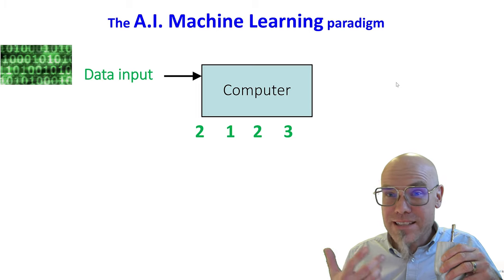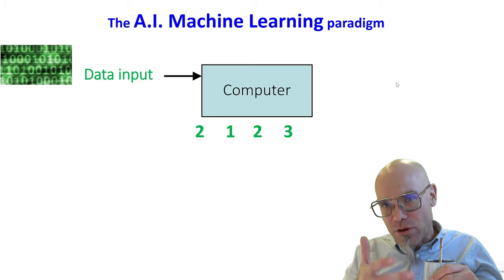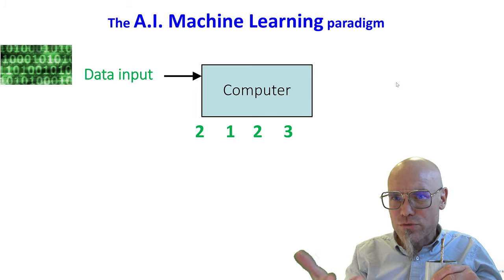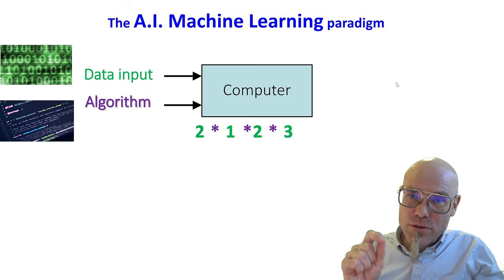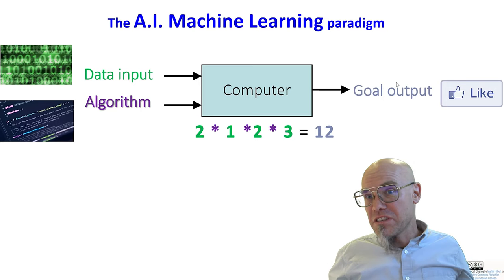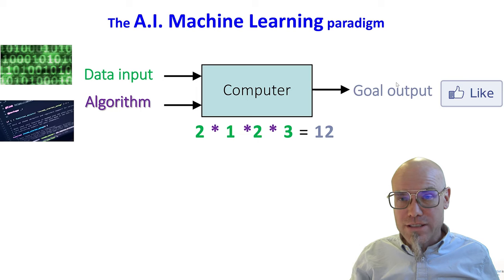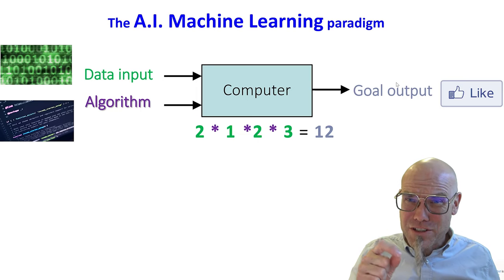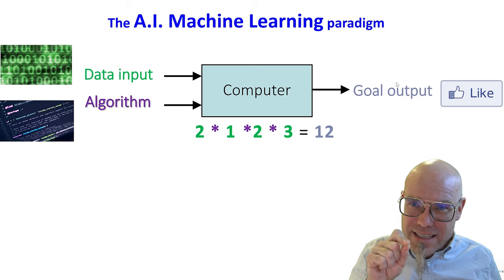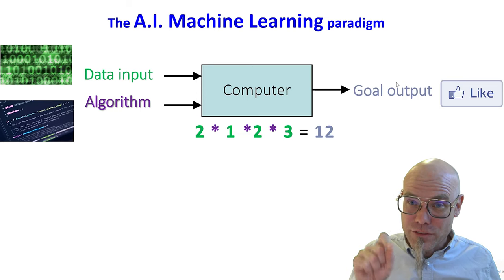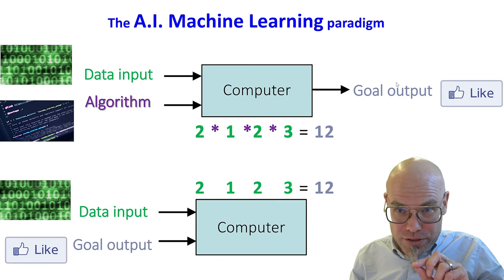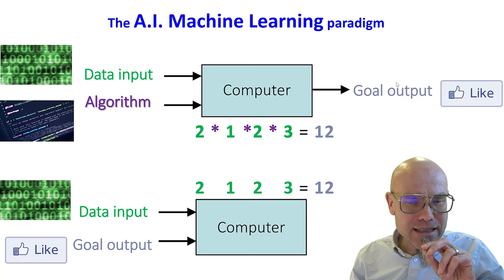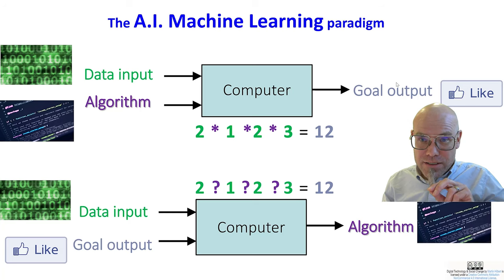Now what the machine learning paradigm does, it turns that on its head. It has data and the goal output, and then it asks the computer to compute the best recipe. Traditionally, what we do is we have data, some observation of reality. We have two, one, two, three, something that we count in reality, we observe. And then we give you the recipe, the algorithm of what to do with it.